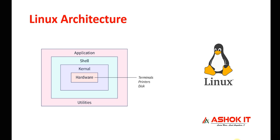When you run any application or any command in the Linux machine, shell is responsible to process that command. Shell is like a container — it will verify whether our command is valid or not. If our command is valid, shell will convert it into kernel understandable form. Kernel is the heart of the Linux operating system, which will convey the information to the hardware to perform the actual operation. So shell acts as a mediator between user and kernel, and kernel acts as a mediator between shell and hardware.